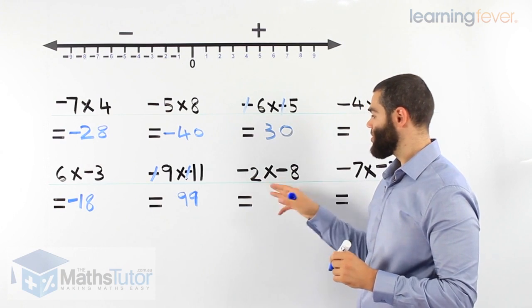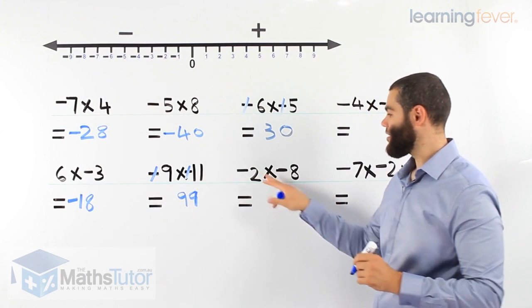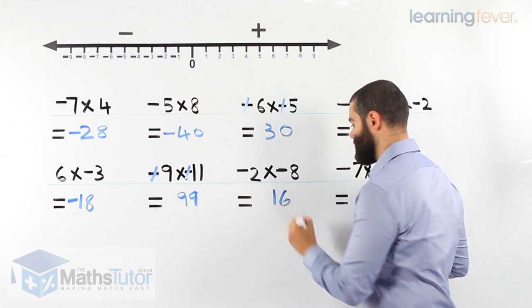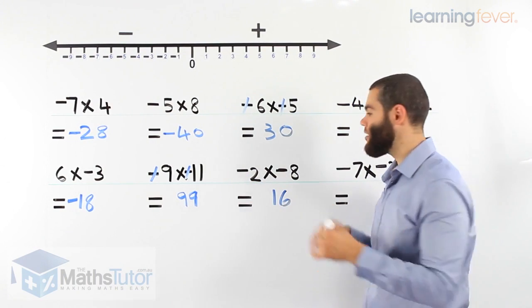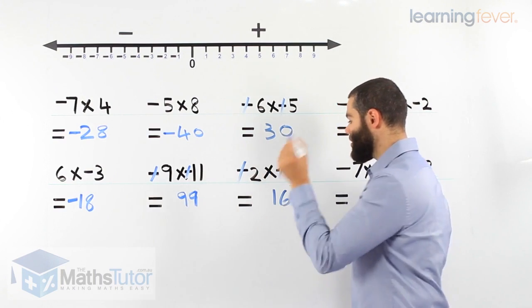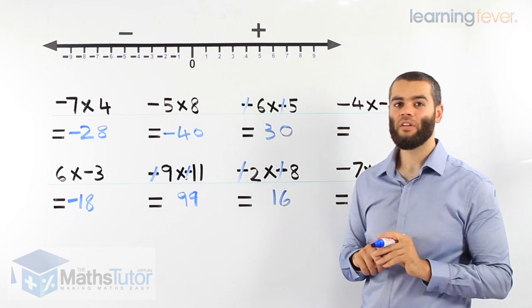Negative 2 times negative 8. Once again, 2 times 8, 16. A negative and a negative cancel each other out, they go to the movies, they're gone. Our answer is positive 16.